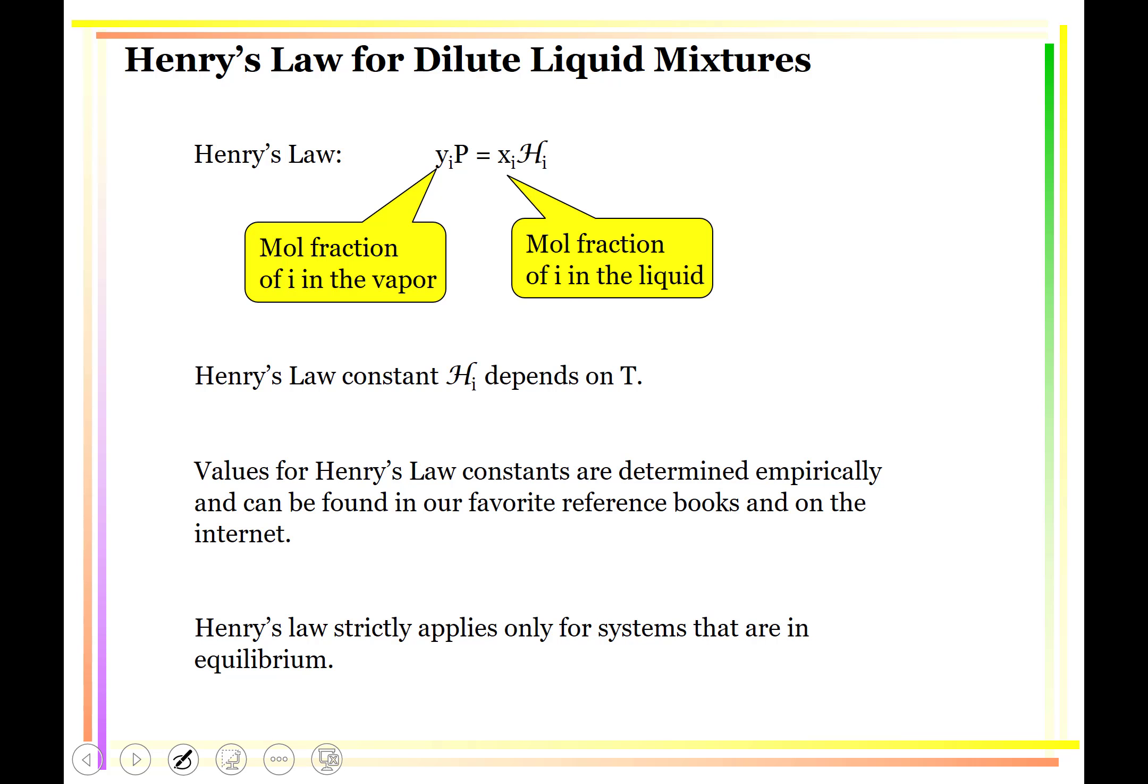times the system pressure is equal to the mole fraction of i in the liquid, which should be a very small number, times this script H, which is the Henry constant.